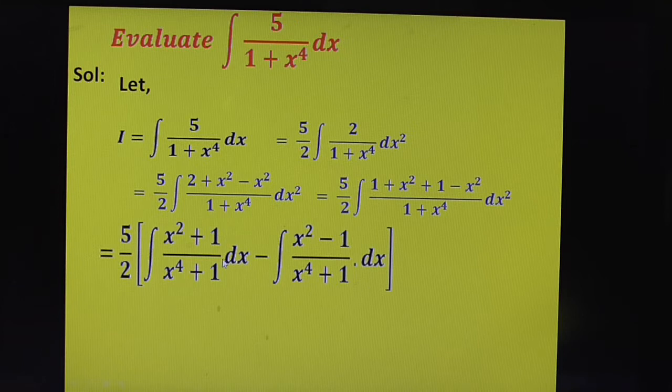Divide by x square to both numerator as well as denominator. Then you find here 1 plus 1 by x square. If you divide by x square to numerator, x square by x square gives 1 plus 1 by x square. Here, x power 4 by x square gives x square plus 1 by x square.